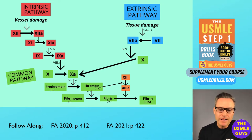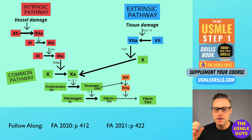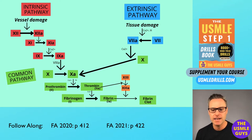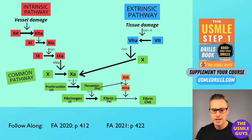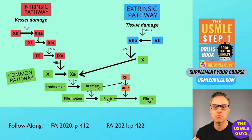The direct thrombin inhibitors work by binding directly to thrombin and inhibiting its ability to move forward with the clotting cascade. Thrombin converts fibrinogen into fibrin, which then goes on to form a clot. We also have a direct factor 10A inhibitor — that is apixaban — which exerts its effects by selectively inhibiting factor 10A. It is able to bind factor 10A in both its free and bound forms, meaning it works independently of antithrombin 3.